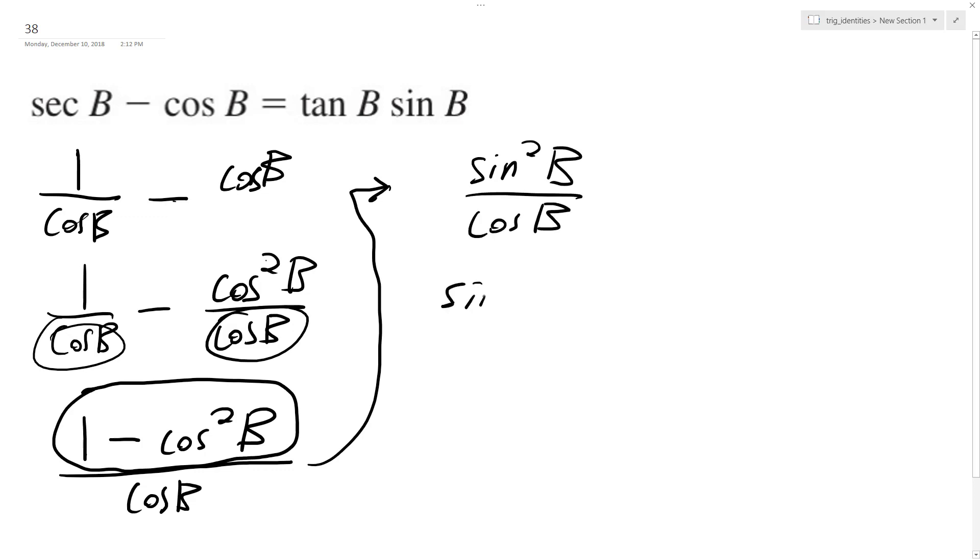And then I break this down into sine b, sine b, which is sine squared, over, and then one of these is going to be over the cosine b. So this becomes tangent b, because that's what tangent is, times sine b.